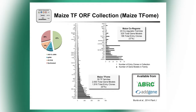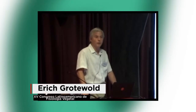We built what we call the Maize TFome: a collection of about 2,200 maize transcription factors, each as an open reading frame in a recombination-ready Gateway vector. This collection is publicly available — we deposited everything into the ABRC Biological Resource Center, from where you can order it. Most transcription factors came from full-length cDNAs cloned by the Arizona Genome Institute, but we had to synthesize about 25% because there was no evidence of expression or no available cDNA from which to amplify them.